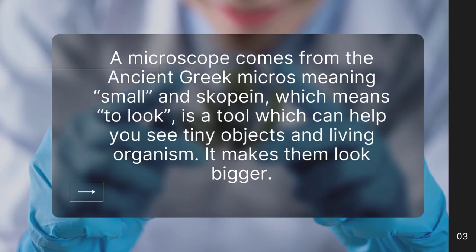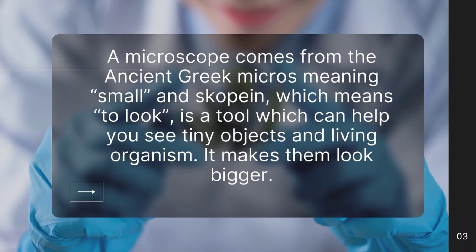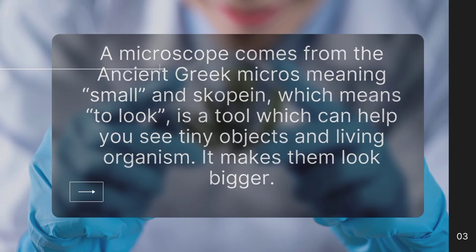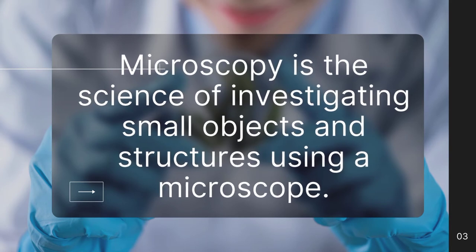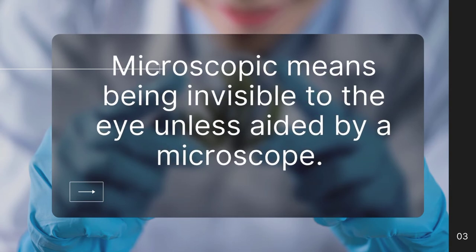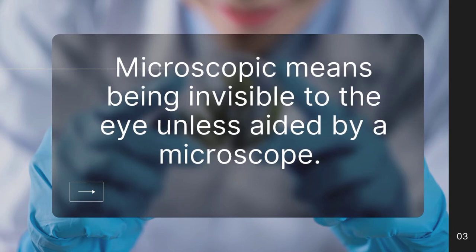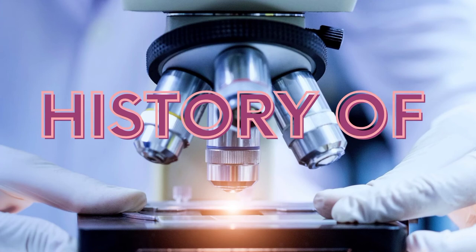Microscope comes from the Greek words mikros, meaning small, and skopein, which means to look. It's a tool which can help you to see tiny objects and living organisms. Microscopy is the science of investigating small objects and structures using a microscope. Microscopic means being invisible to the eye and thus aided by a microscope.